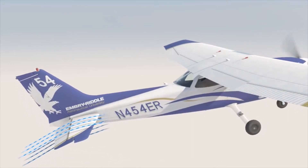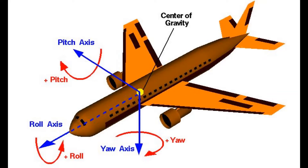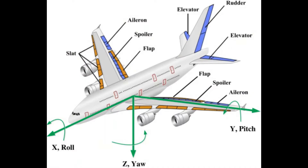The aerodynamic force causes the plane to rotate about one of its axes. These are known as the pitch, roll, and yaw axes. The primary flight controls, shown in blue, are used to control the aircraft's rotation about these axes.